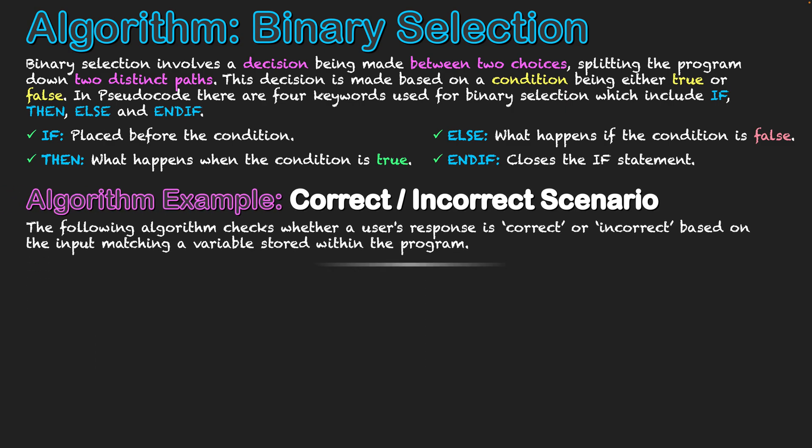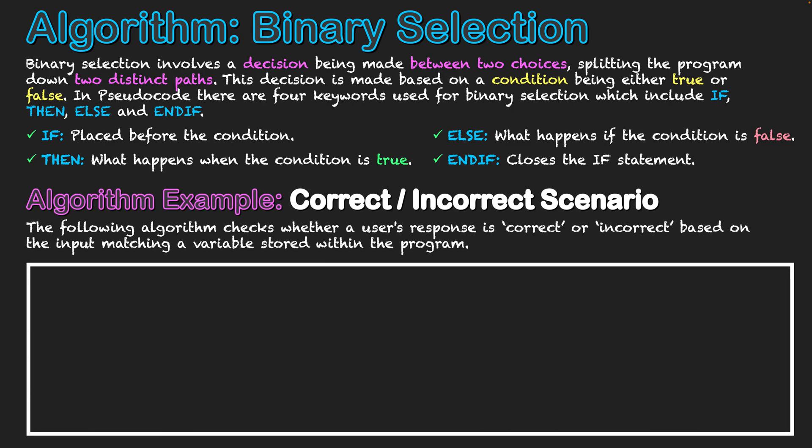So what we're going to do now is look at a scenario, and this is a correct/incorrect scenario. It's basically going to be an algorithm that checks whether a user's response is correct or incorrect based on the input matching a variable stored within a program.